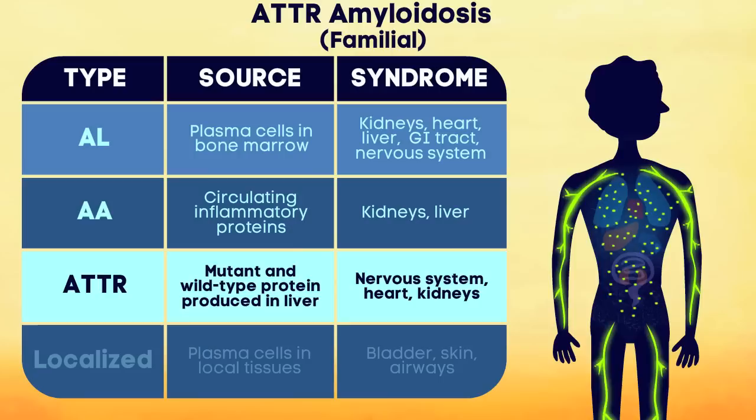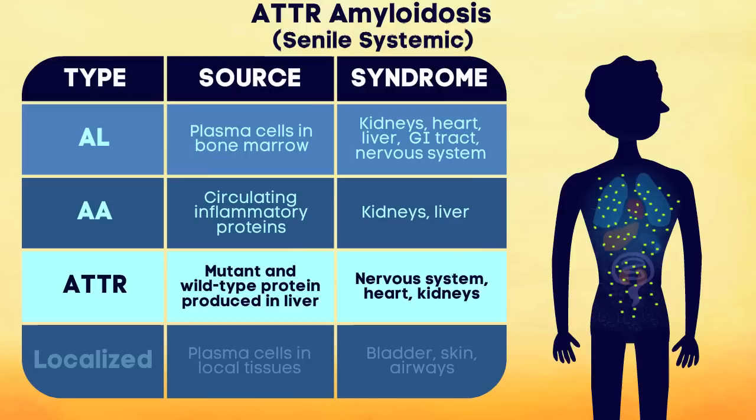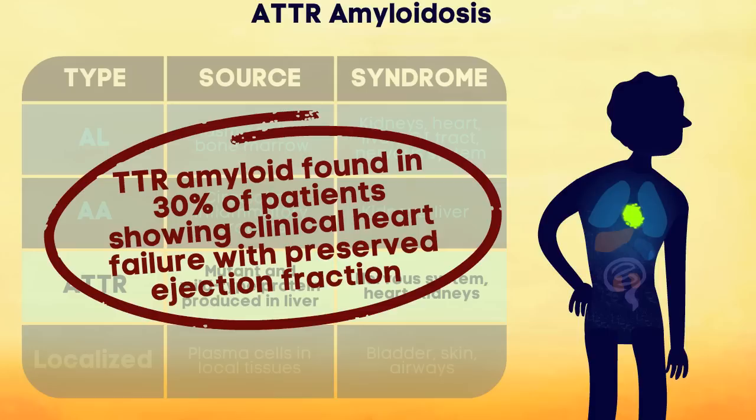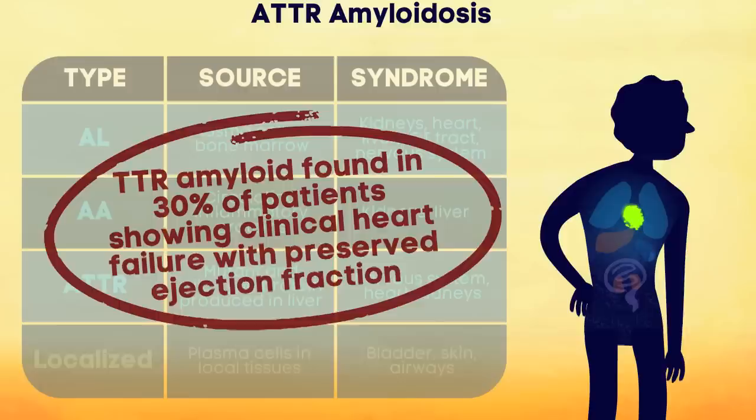A non-hereditary form of the disease, known as senile systemic amyloidosis, results from TTR amyloid building up in the hearts of the elderly. Whether caused by genetic factors or increasing age, TTR-mediated amyloidosis is actually thought to be more common than AL amyloidosis, though it often goes undiagnosed.